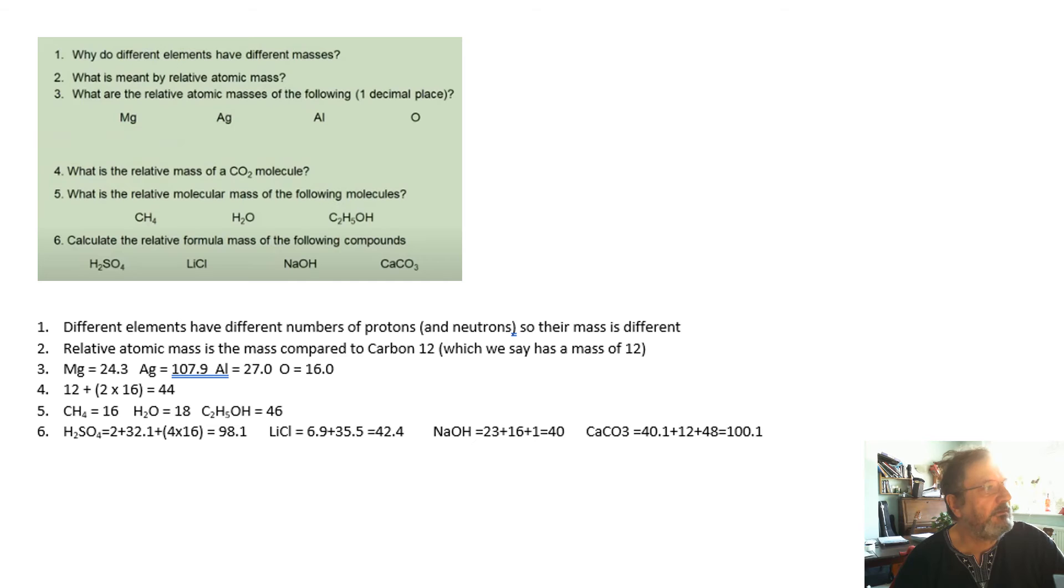This is where you use your periodic table. Work with these to one decimal place. So for example, magnesium is 24.3, silver is 107.9, etc. And then the relative molecular mass, you see, you just add them up, basically, looking at the numbers. I'm assuming these are straightforward, and you can do them.